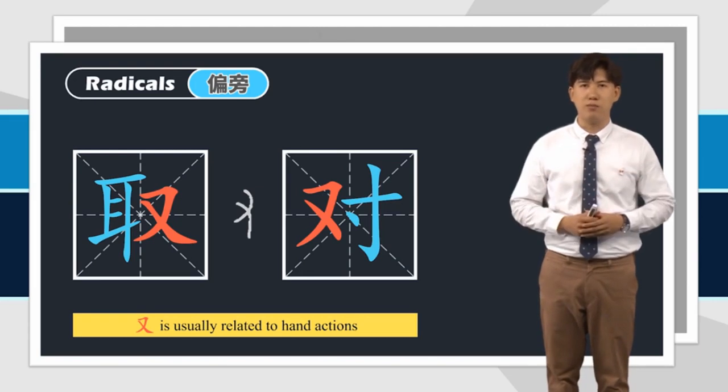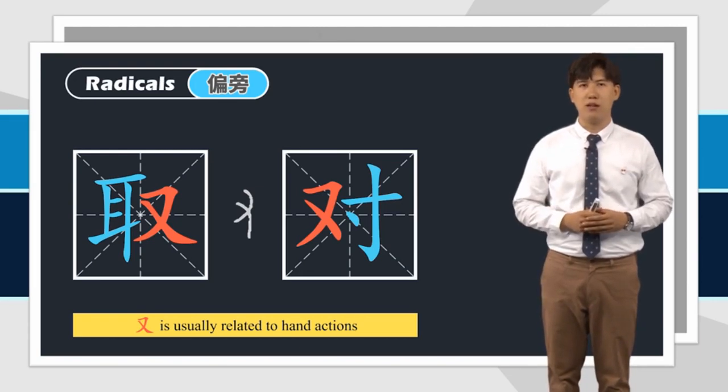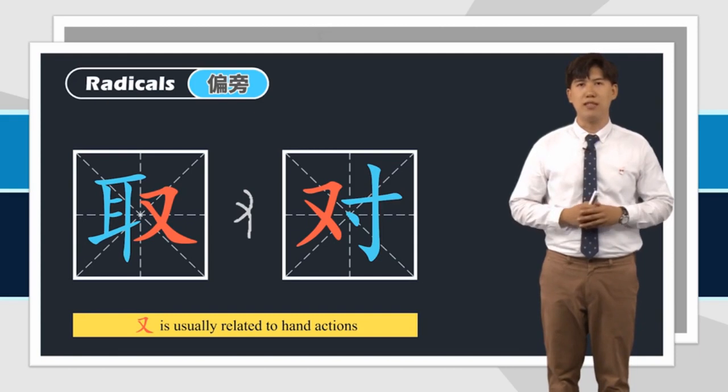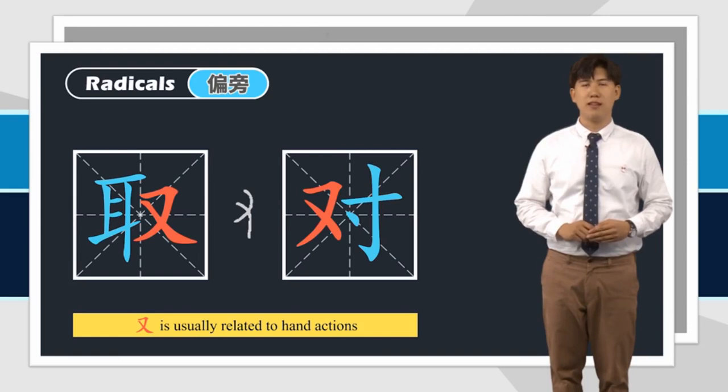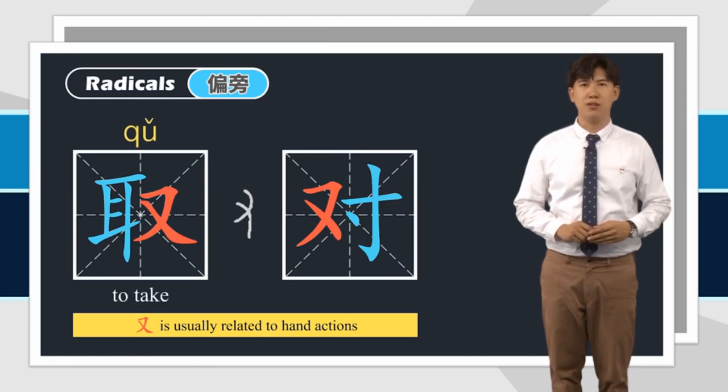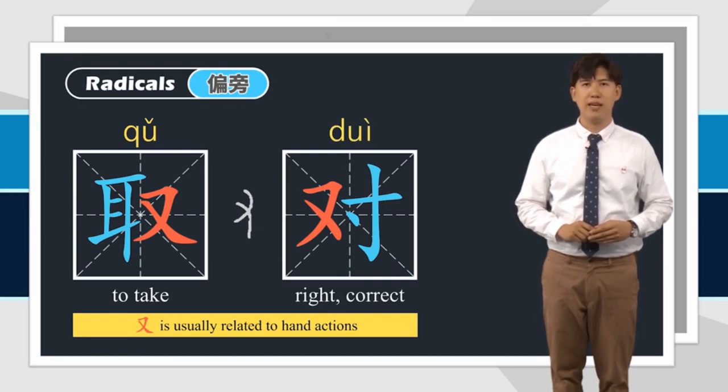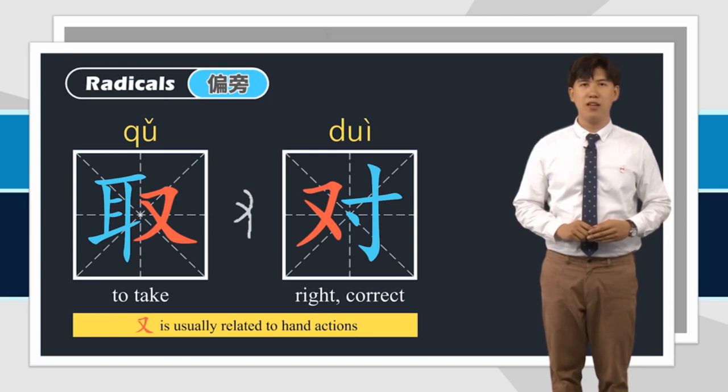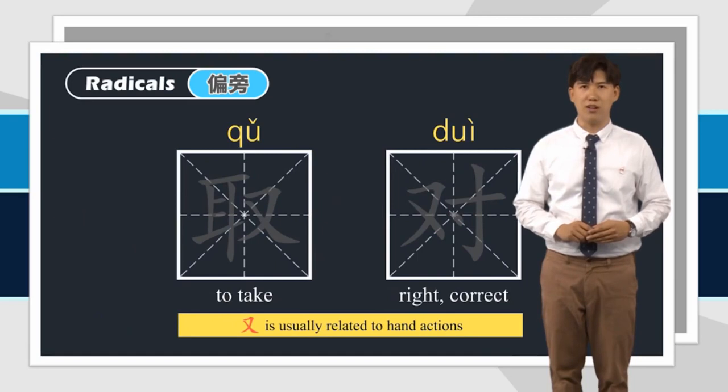And with its development, 右字旁 is written in the way today and has many other meanings. 右字旁 can appear in the right or left side of a character, such as 取 means to take, and 对 means right or correct. Now let's see how to write them together and pay attention to the stroke order.